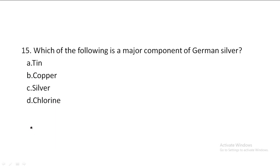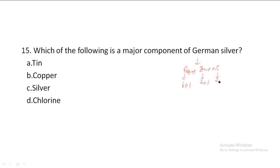Next one: Which of the following is a major component of German silver? Option A: Tin, Option B: Copper, Option C: Silver, Option D: Chlorine. German silver is composed of Copper plus Zinc plus Nickel. Copper is approximately 60%, Zinc 20%, Nickel 20%. The majority portion is Copper. Option B, Copper, is the correct answer.